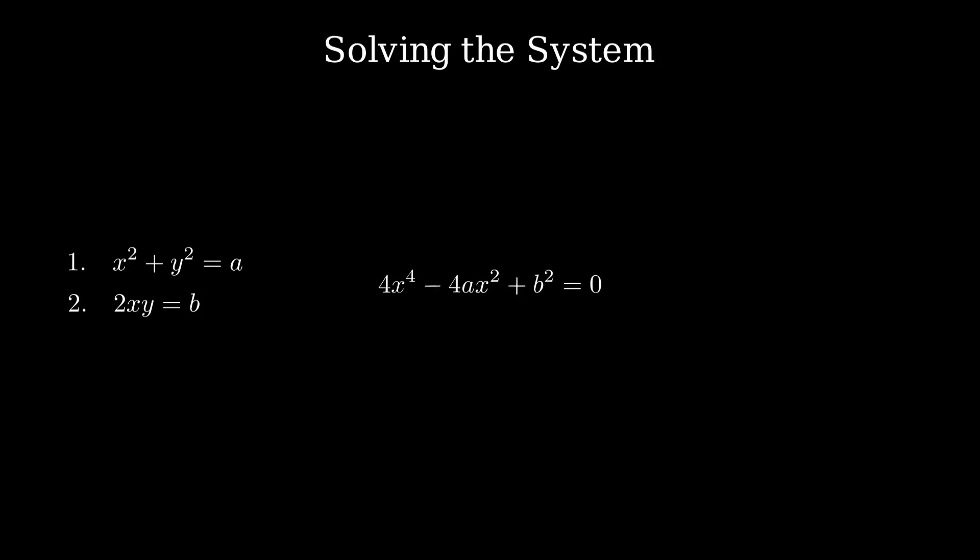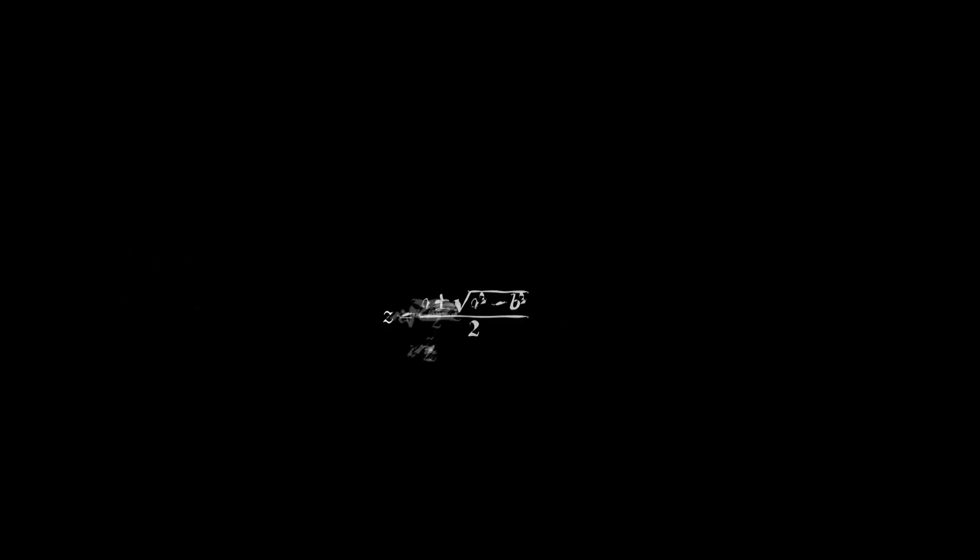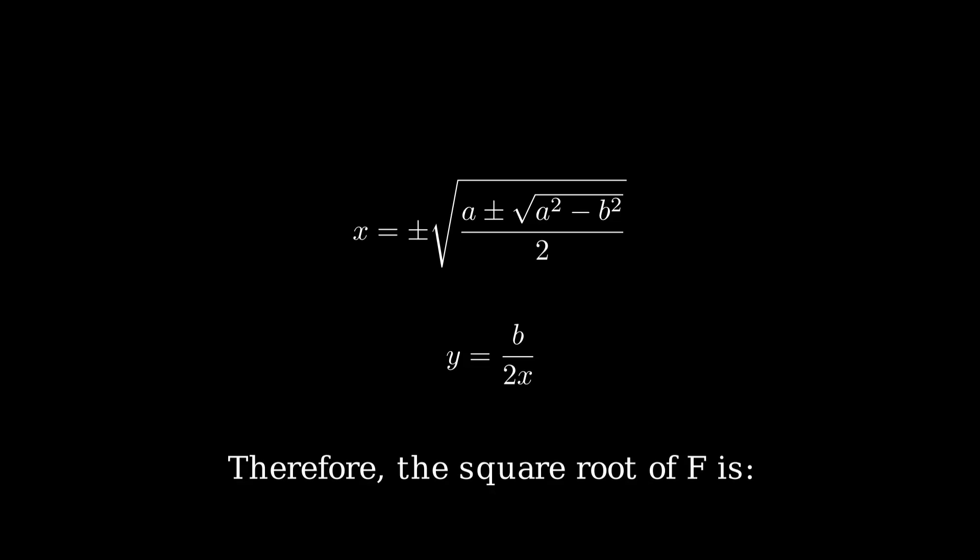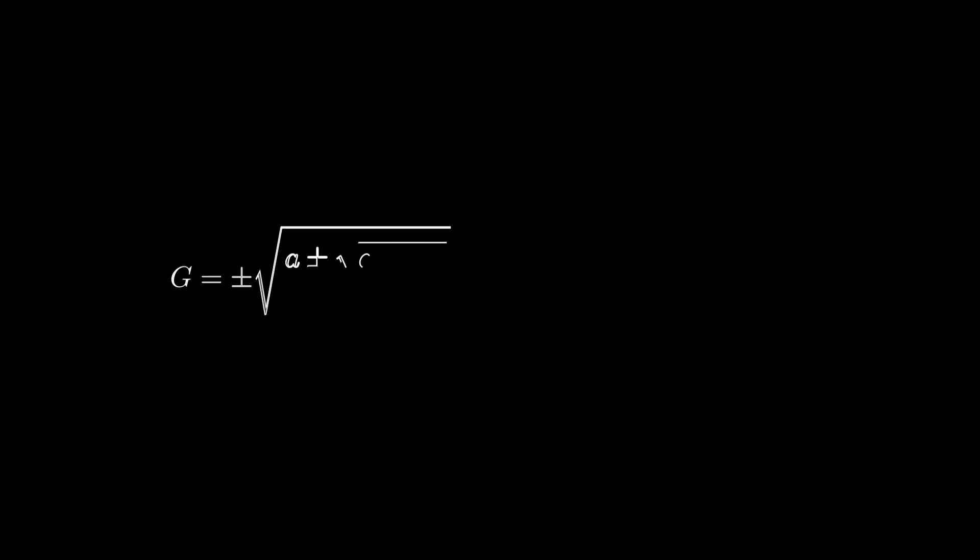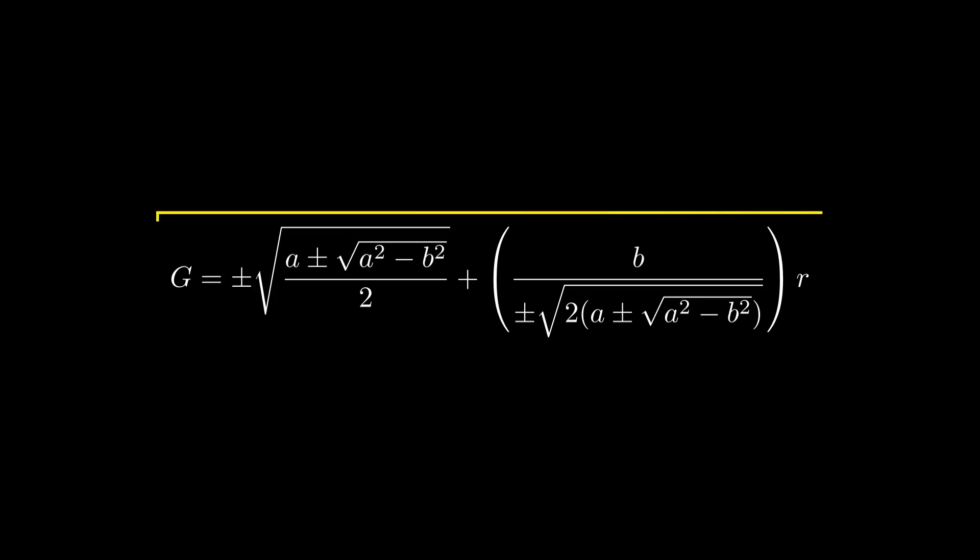Solving the second equation gives y equals b over 2x. Substituting into the first equation, we get x squared plus b squared over 4x squared equals a. Multiplying both sides to clear the denominators, we reach a quartic equation in x. To simplify, let z equal x squared. We now have a quadratic in z: 4z squared minus 4az plus b squared equals 0. Solving this using the quadratic formula gives z equals a plus or minus the square root of a squared minus b squared, divided by 2. Taking the square root of z gives us x, and from that, y is b over 2x. Putting everything together, the square root of f is x plus yr, where x equals the square root of a plus or minus root of a squared minus b squared, all divided by 2, and y equals b divided by 2x. This is our general formula for extracting square roots in the dyadic world.